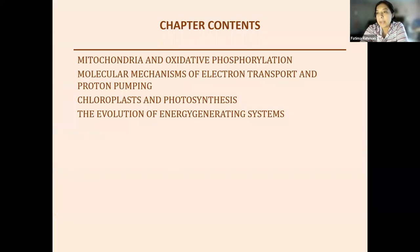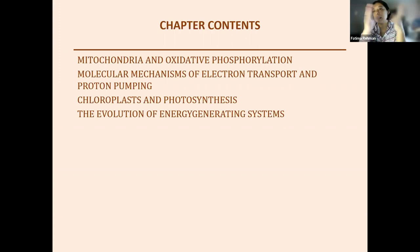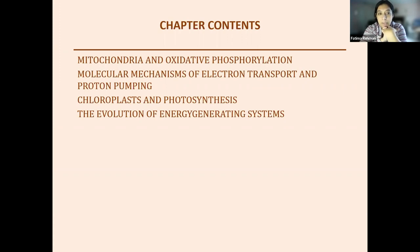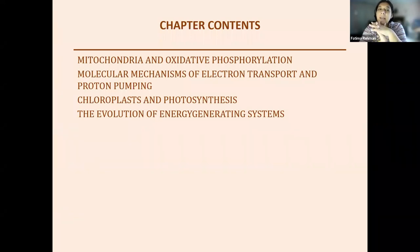We're going to focus on mitochondria and oxidative phosphorylation and the molecular mechanism of the electron transport chain, the different parts of it, the three main enzymes, leading up to ATP synthase where most of the ATP is produced. We'll also talk about chloroplasts and photosynthesis, how that compares with the mitochondrial phosphorylation system, and at the end we may get to the evolution of energy generating systems.